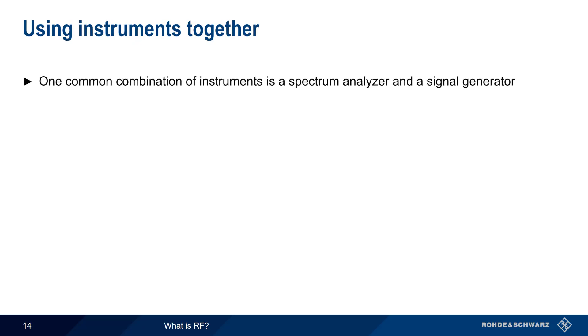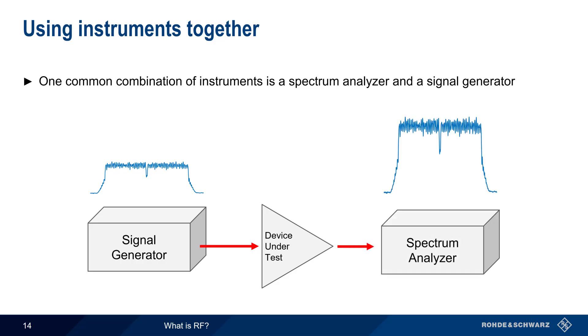A very common combination of test and measurement instruments is a spectrum analyzer and a signal generator. For example, imagine that our DUT, or device under test, is an amplifier. We can use a signal generator to generate a signal that is sent into the DUT. The amplified signal can then be measured and analyzed using a spectrum analyzer.